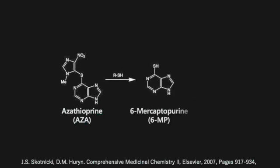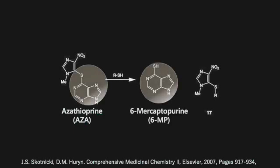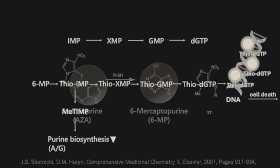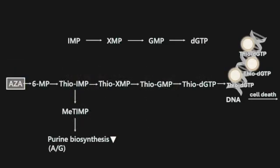Azathioprine is a prodrug of mercaptopurine. It is converted to mercaptopurine.